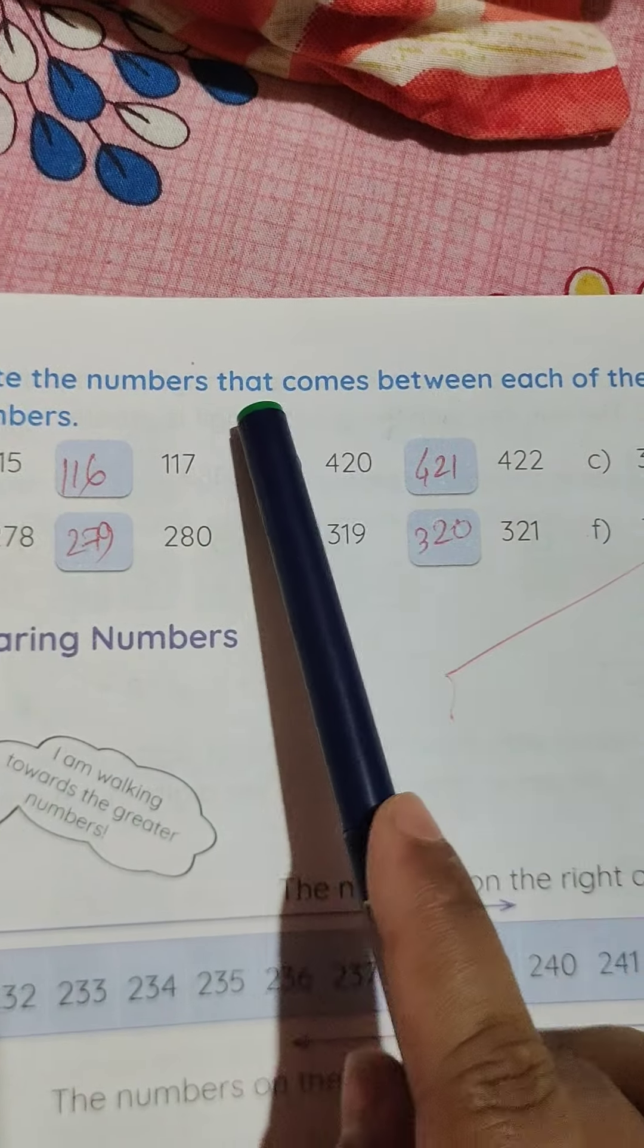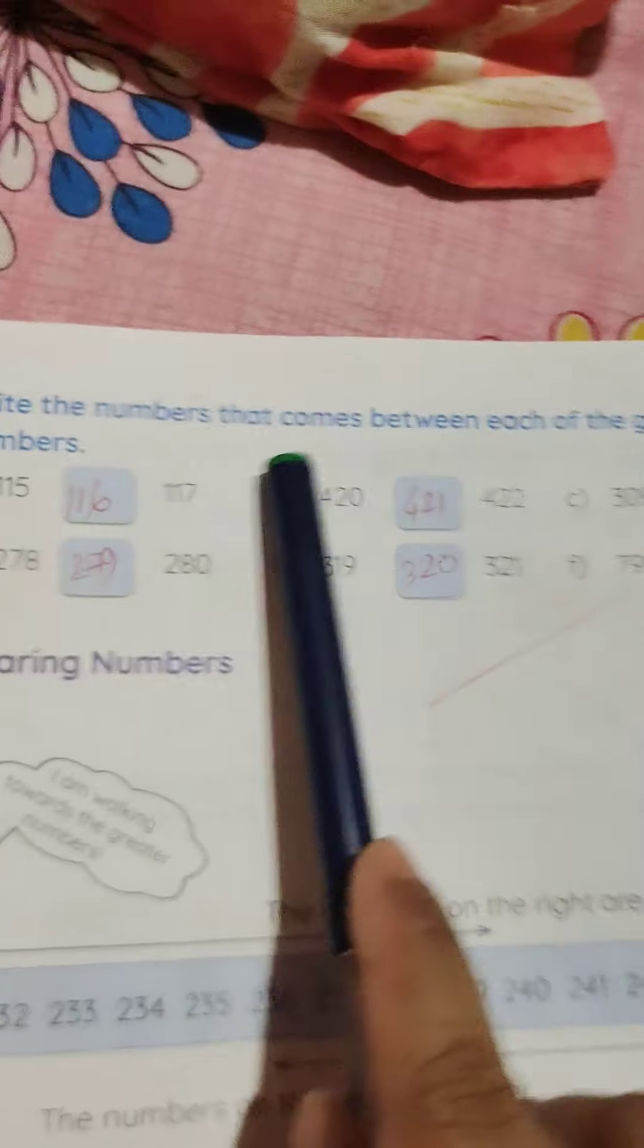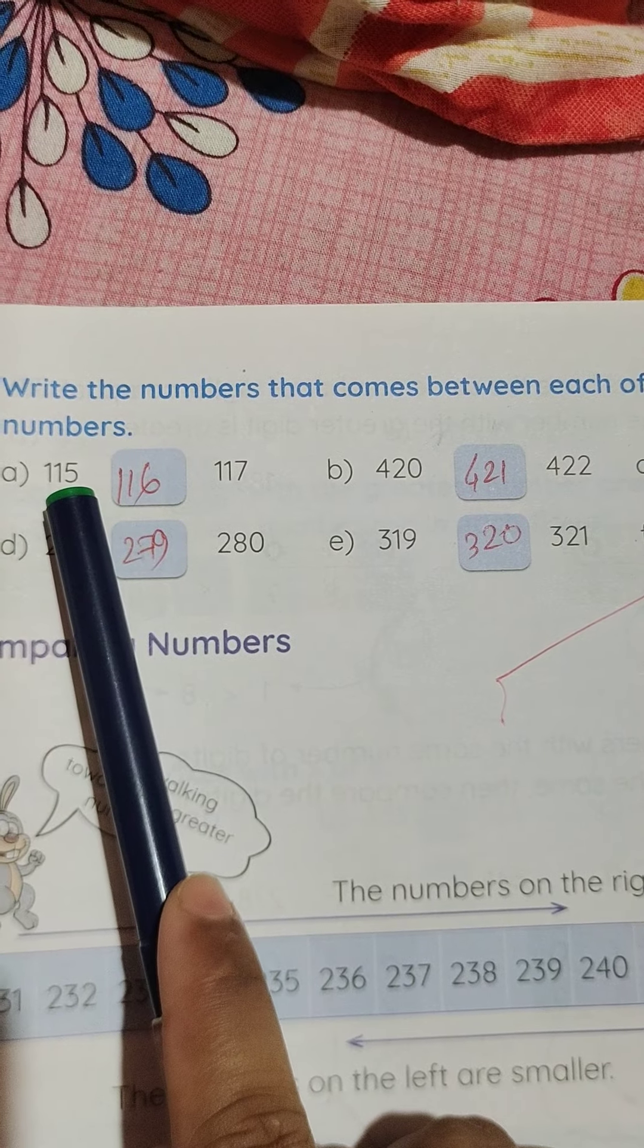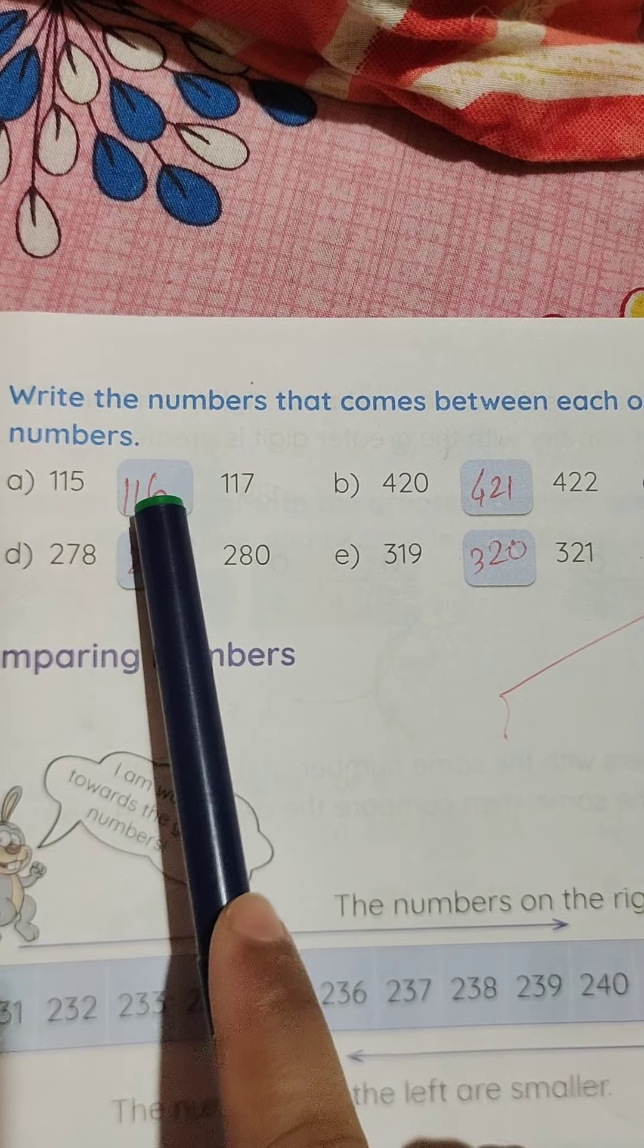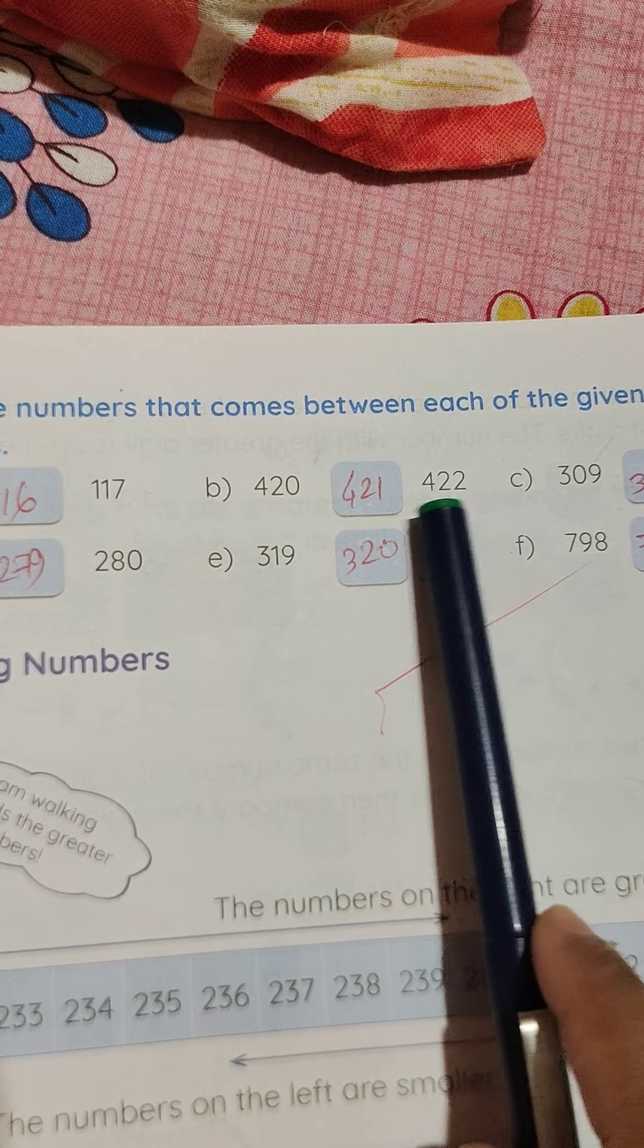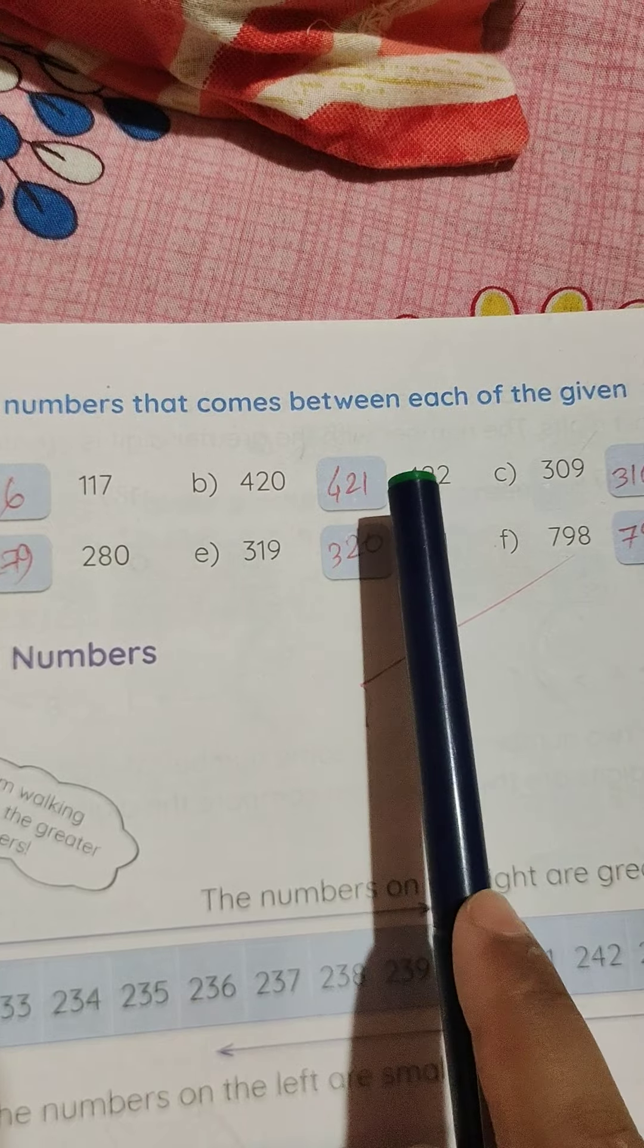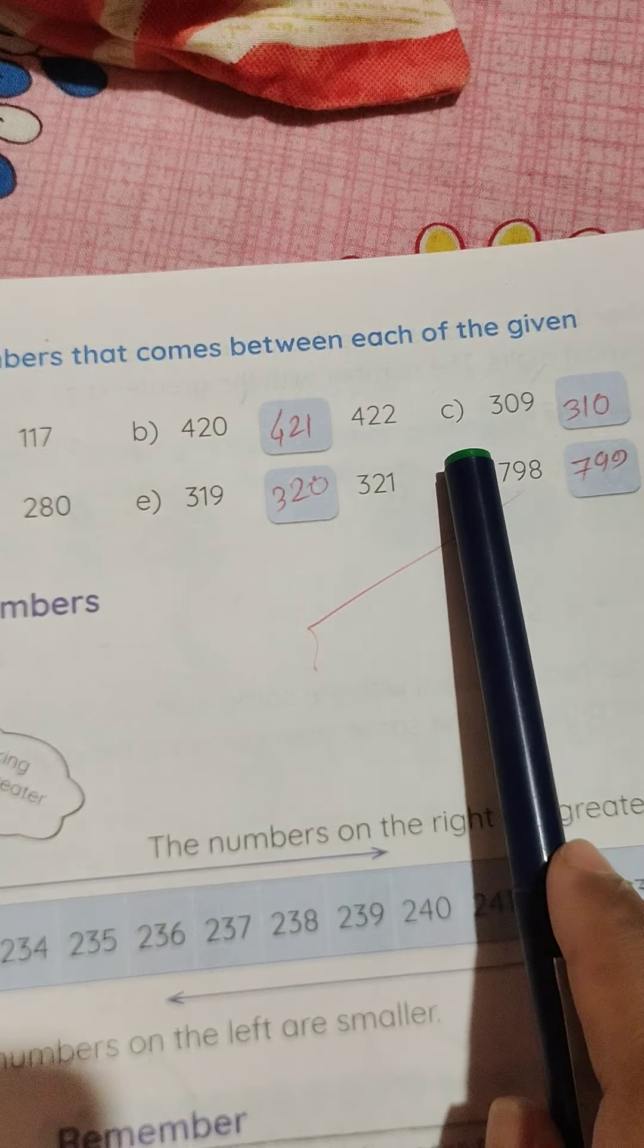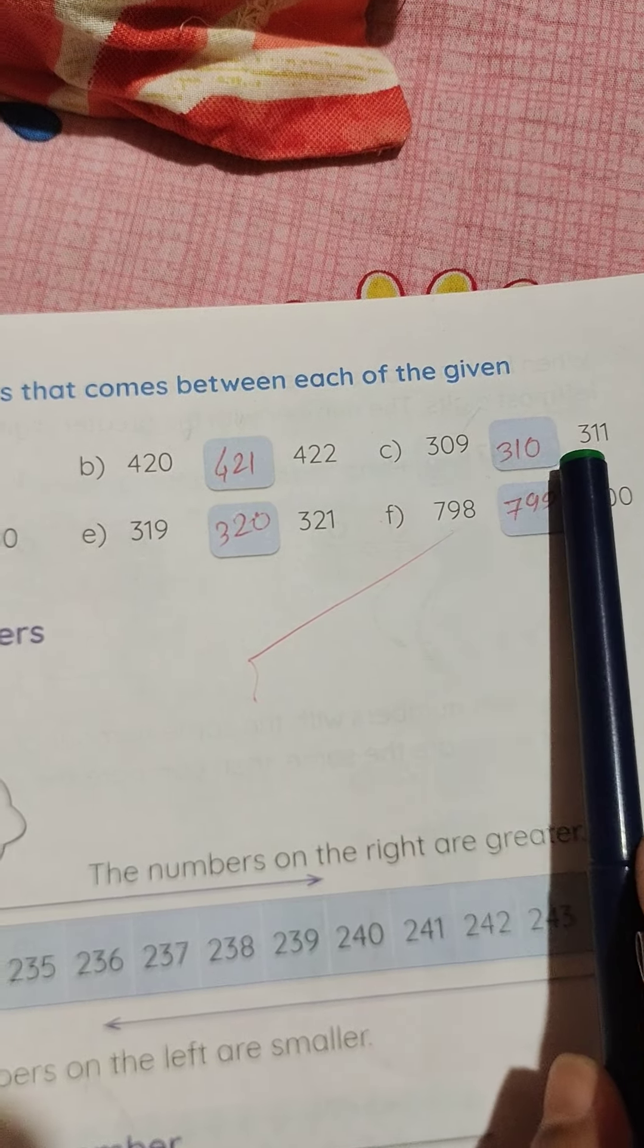Write the numbers that come between each of the given numbers. 115 and 117, the number is 116. 420 and 422, 421 is the between number. 309, 310, 311.